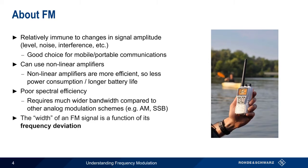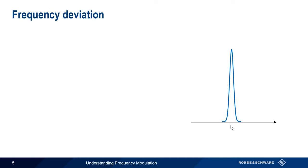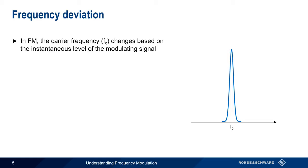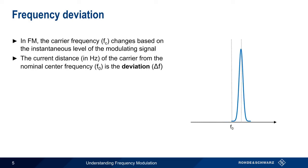The width of an FM signal is a function of its frequency deviation. Remember that in FM, the carrier frequency, F sub c, changes based on the modulating signal – in other words, the carrier moves up and down in frequency as the modulating signal changes. A very important concept in FM is deviation, which is the current distance, in hertz, of the carrier from the nominal center frequency of the signal.